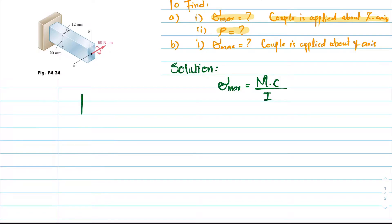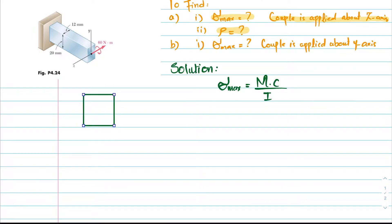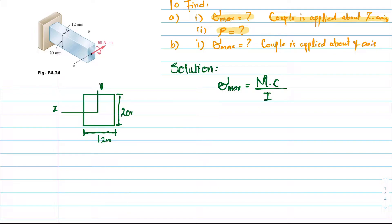Let's draw the given cross section. This is the given section with the Y axis and Z axis labeled. The dimension along one side is 12 millimeters while the other dimension is 20 millimeters. We will first find the moment of inertia about the Z axis.